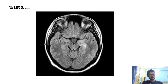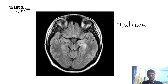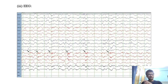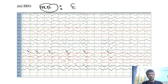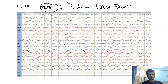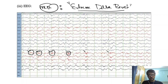On MRI brain, particularly T2-weighted or FLAIR sequences, you'll see abnormalities involving the temporal lobe. On EEG — a very important MCQ point — the characteristic abnormality is extreme delta brush. This is a key MCQ question; the extreme delta brush pattern is similar to the delta brush pattern seen in the neonatal EEG.